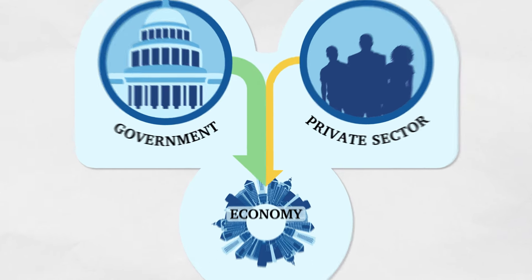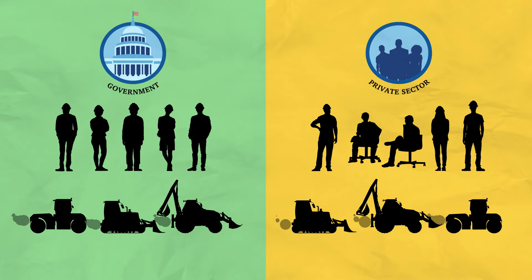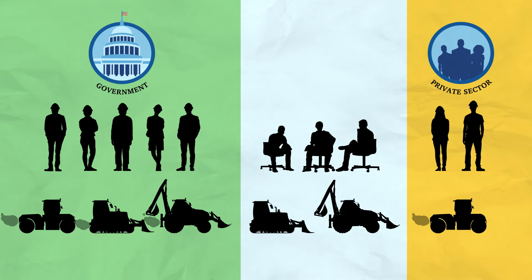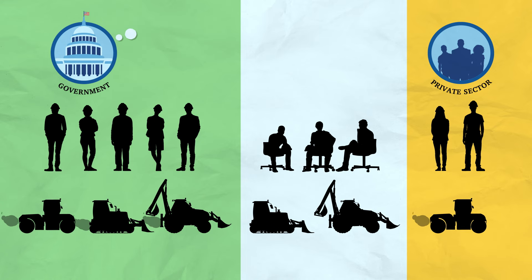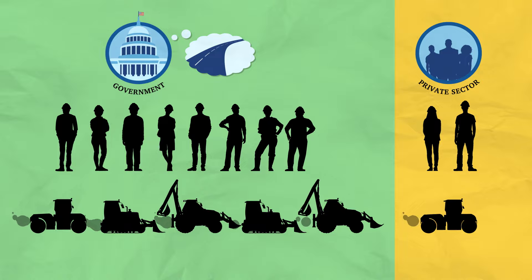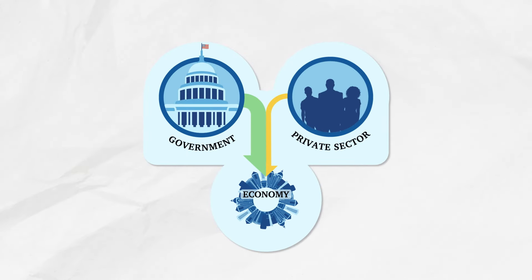Let's return to that original example, except this time the economy is in a recession and workers and capital are underemployed. If the government wants to build that new road, it can hire those underused resources and boost GDP without crowding out private sector spending. In this instance, government spending likely would increase GDP.